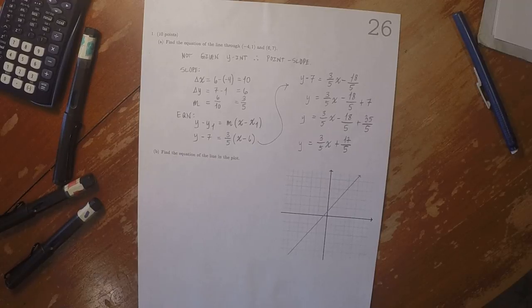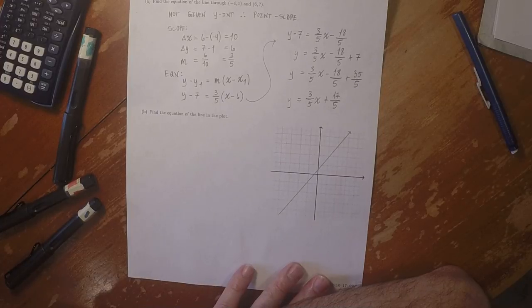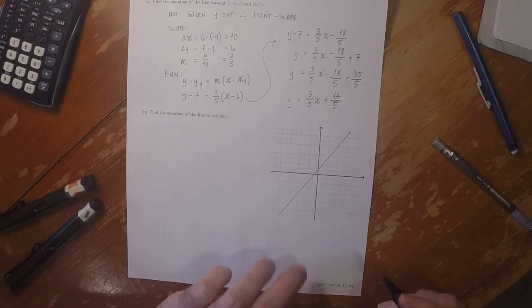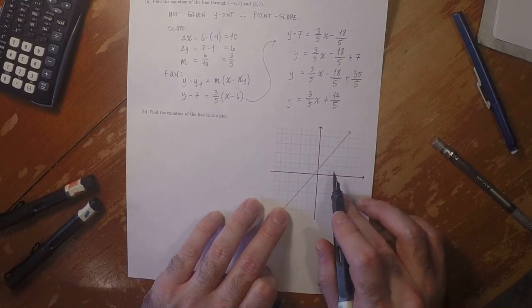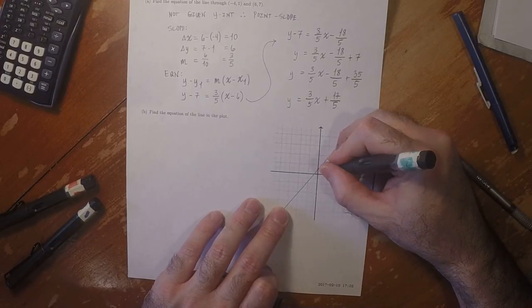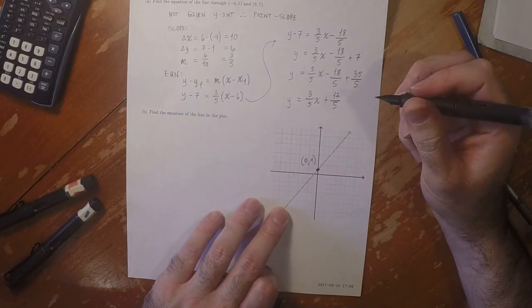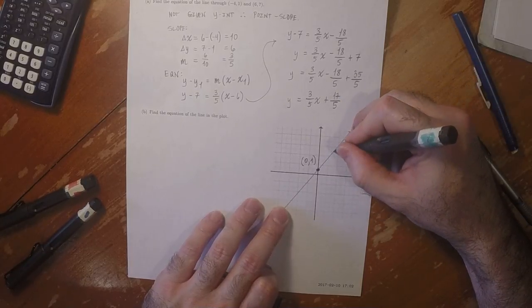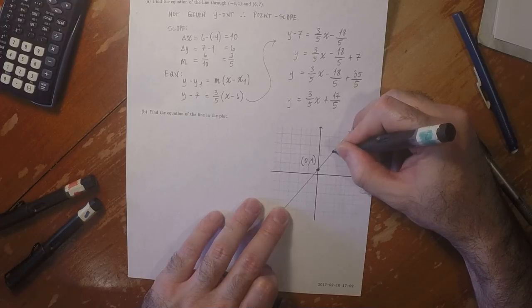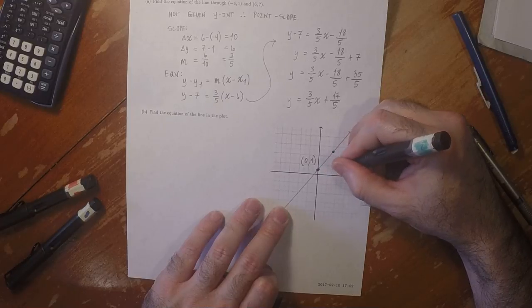Okay, so part b is really just a visual version of part a. Let's see, can we see any points that this line goes through for sure? It appears to go through that point, which is (0, 1), and it also goes through this point, which is (3, 5).